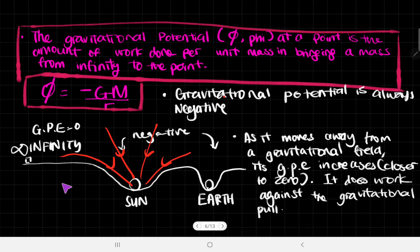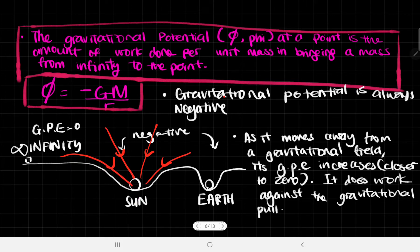And therefore, we can say that the work done is a negative value — although work is a scalar property, it's just because this is set at zero that it's going to be negative as it goes into a gravitational field. Therefore, we conclude that gravitational potential is always negative.